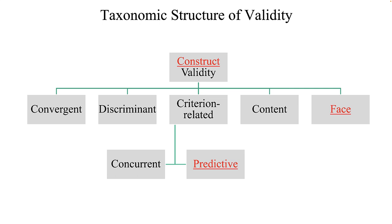Construct validity at the very top answers the following questions: Does this thing exist? Can we measure it? And do we know how it relates to other things? This is the overarching type of validity that is of utmost concern. Next we have convergent and discriminant validity. Convergent validity answers the question: To what degree do measures of this variable correlate with measures of similar variables? Discriminant validity answers the question: To what degree are measures of this variable different from measures of theoretically different variables?